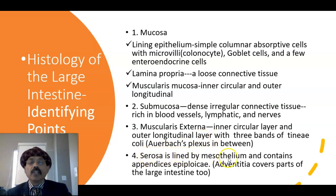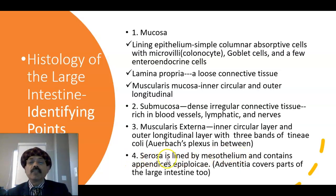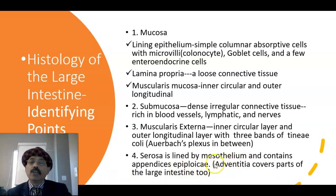The serosa is lined by mesothelium, or visceral peritoneum — that is simple squamous epithelium. Part of the large intestine is retroperitoneal, like that of the ascending colon and the descending colon. So the posterior part is covered by the adventitia, not by the serosa.